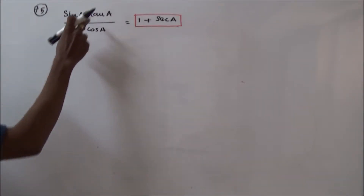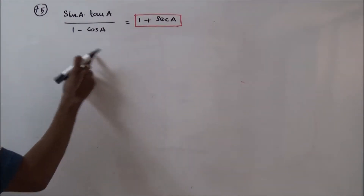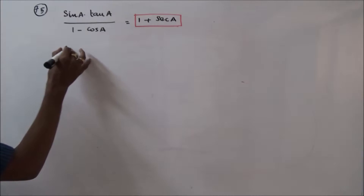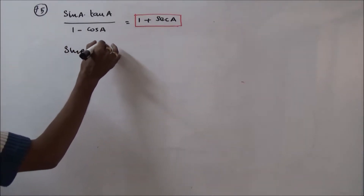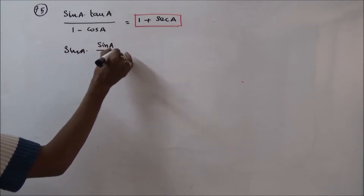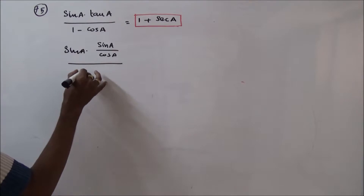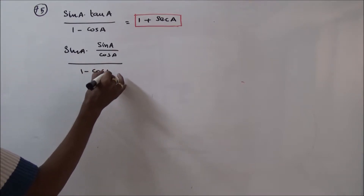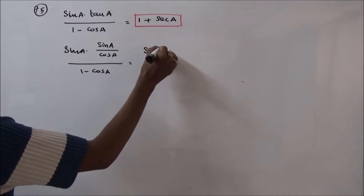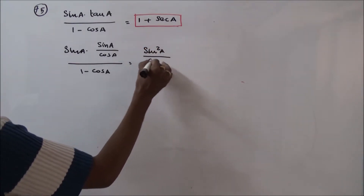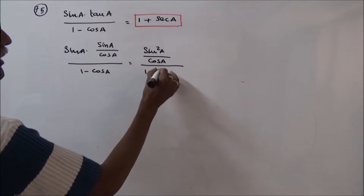We need to prove that sine A times tan A divided by 1 minus cos A is equal to 1 plus secant A. Starting with the left-hand side, I write sine A, and tan A can be written as sine A by cos A. So we have sine A times sine A by cos A, divided by 1 minus cos A, which gives sine squared A by cos A, divided by 1 minus cos A.